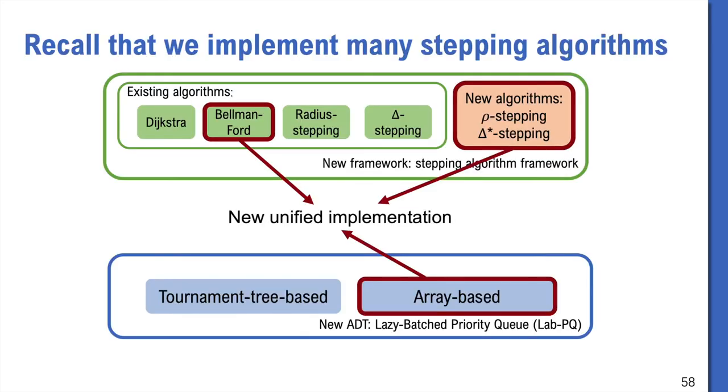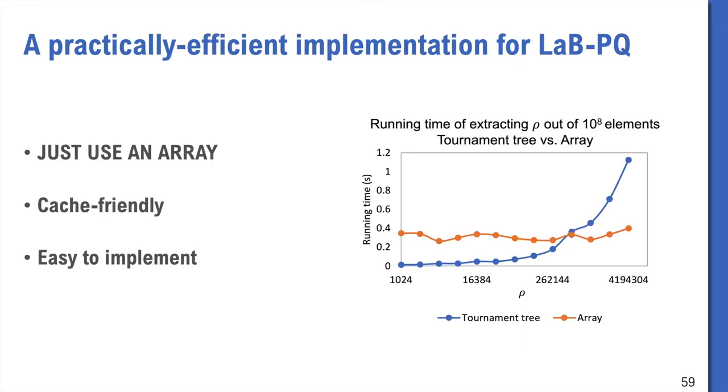Let me introduce some implementation details. We also implement three algorithms in our stepping algorithm framework, with almost the same code and just substitute different thresholds. An important thing is that, in practice, we just use a simple array-based data structure to implement the LabPQ, because it's cache-friendly and easy to implement. We test the running time of extracting rho out of 10^8 elements by using tournament tree and array. It shows if we use a large rho, using an array is faster than using a tournament tree.